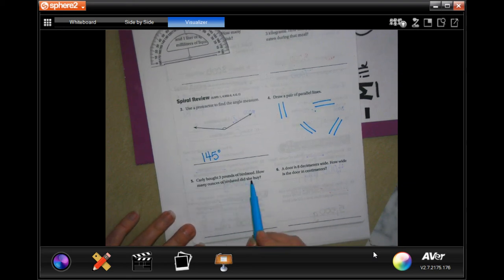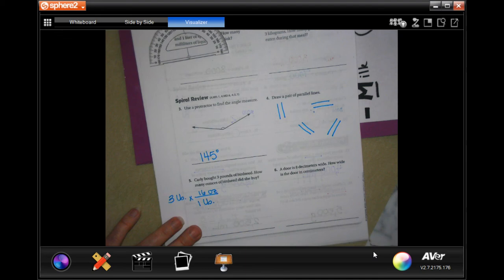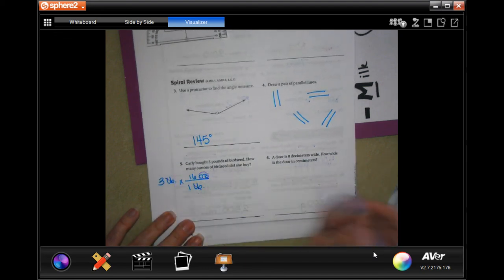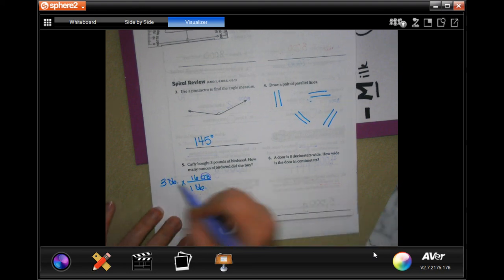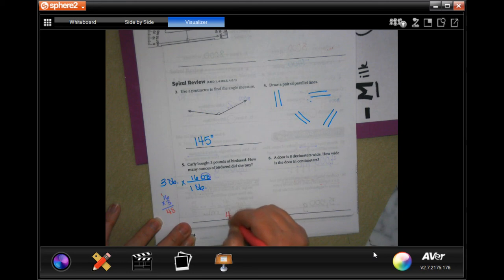Carly bought three pounds for a birthday. How many ounces would you buy? So we're going to start over here. We have three pounds, and in one pound there are 16 ounces. So I'm going to cancel out my pounds. I'm getting an ounce, which is what I want. And three times 16 - three times six is 18, carry the one, three times one is three plus one is four - 48 ounces.